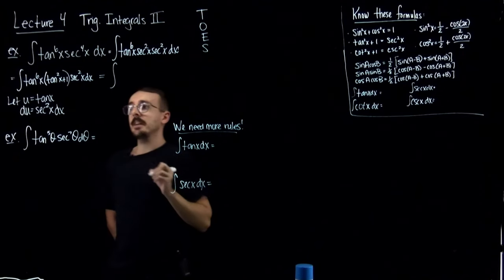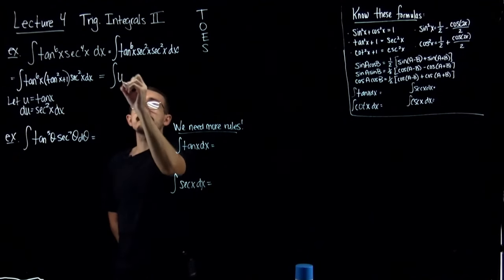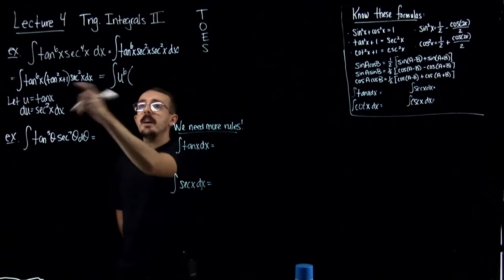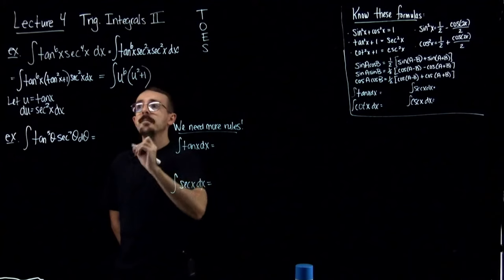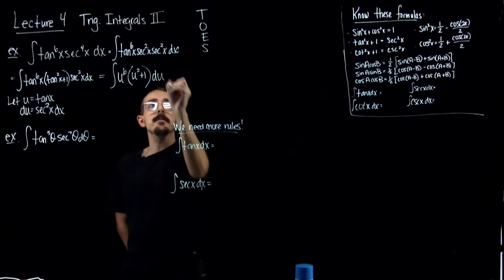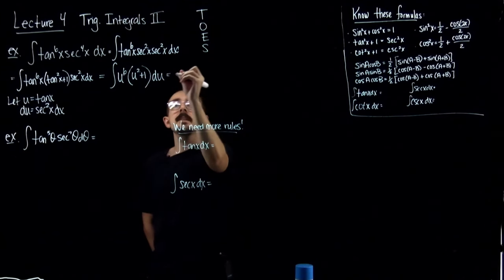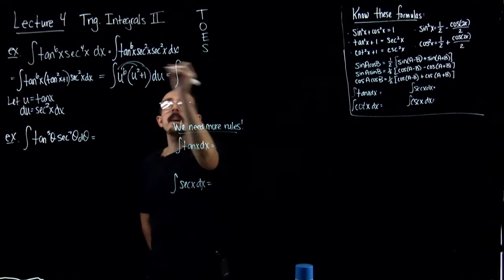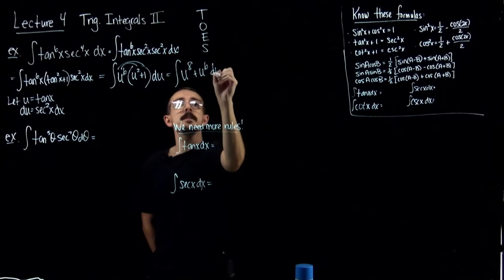So if I make my u-substitution now, u is tangent, so I'm going to get u to the 6th power. This becomes times u squared plus 1. And then secant squared dx is identically du. Going ahead and distributing that, I get u to the 8th plus u to the 6th, du.